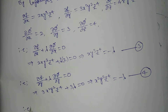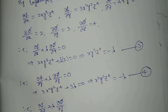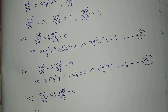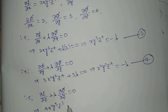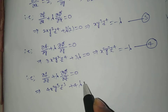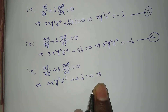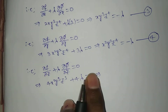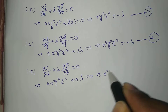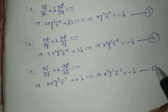And ∂f/∂z plus λ times ∂φ/∂z equals 0. That gives 4x squared y cubed z cubed plus 4λ equals 0. Taking 4 as common, we get x squared y cubed z cubed plus λ equals 0, therefore x squared y cubed z cubed equals minus λ. This is equation number 5.